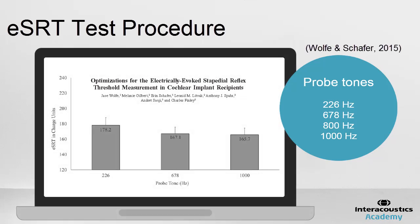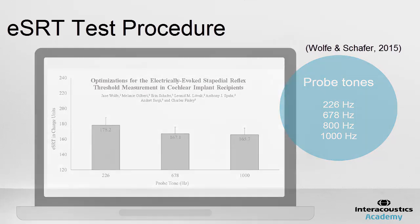Wolff and others suggest cochlear implant surgery can lead to an increase in the middle ear stiffness. Their study showed that 678Hz and 1000Hz probe tones provide a significant improvement in the ESRT detection relative to that using a 226Hz probe tone.